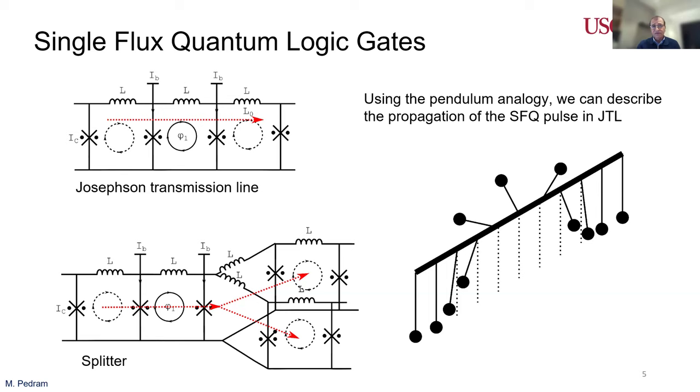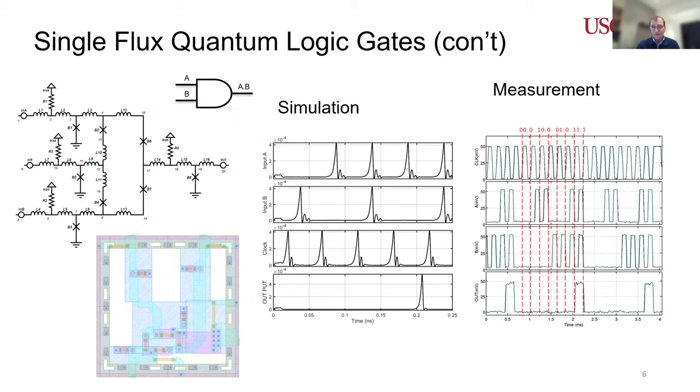Single flux quantum logic gates could be designed to act as transmission lines, as splitters, as AND gates, as OR gates. For example, this is an AND gate when both inputs within a window of time, which is defined by the clock cycle time, arrive, then the output fires on arrival of a clock. Otherwise, there's going to be no activity at the output. We have verified by simulation and measurements that all of these things work.